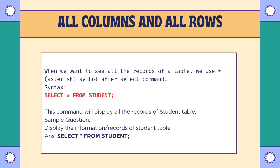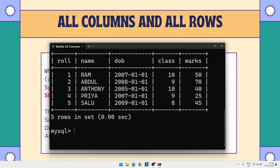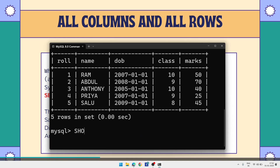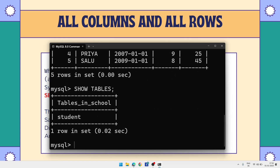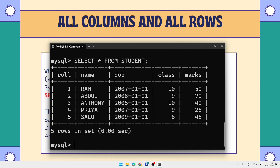A probable question could be: display the information or records from the student table. You can write SELECT * FROM student. Let's have an example — I have already opened my MySQL database. Let's see what tables are available: I have just one table, the student table. To see all the information from this table, we write SELECT * FROM student, and this command will display all the records from the table.